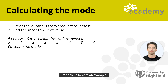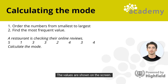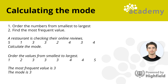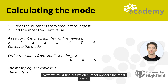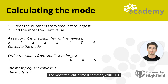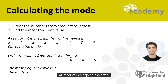Let's take a look at an example. A restaurant is checking their online reviews. Calculate the mode. First, order the numbers from smallest to largest: 1, 2, 3, 3, 3, 4, 4 and 5. Next, find which number appears the most often. The most frequent value is 3 — it appears 3 times, while all other values appear less often. Therefore, the mode is 3.